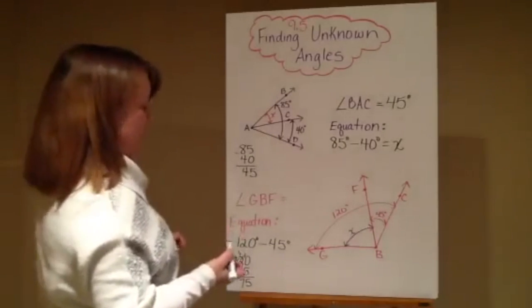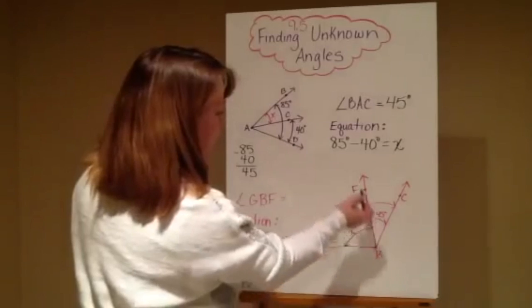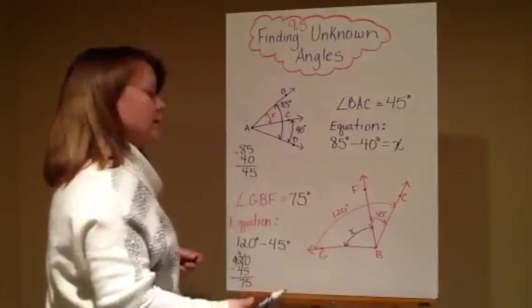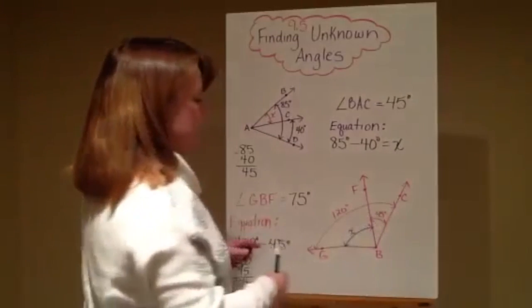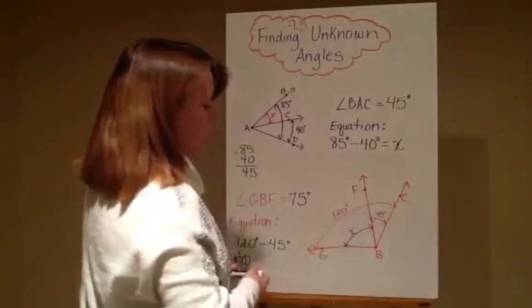Should be 75 degrees. So that means that angle GBF should equal 75 degrees. Again, I'm taking those angle measurements that I do have to come up with that missing angle X.